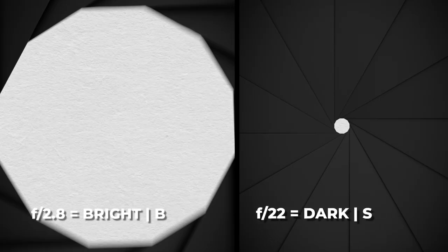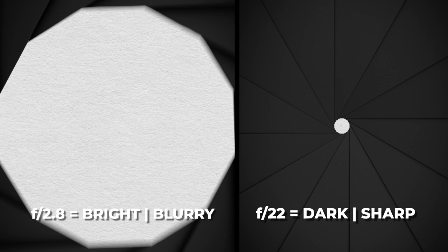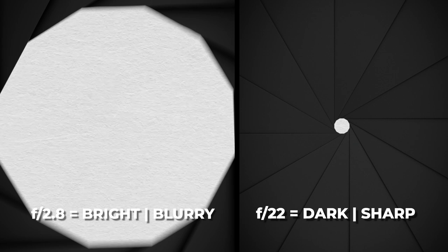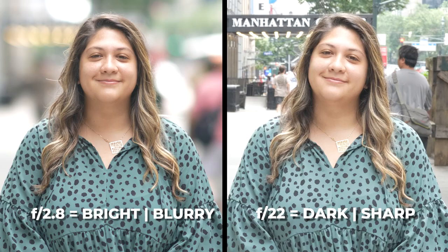The simple formula is: if you want a blurry background, shoot at a low aperture. If you want everything in focus, shoot at a high aperture. Or to put it another way, if you want everything in focus, you need a lot of available light so you can close the aperture as much as possible. And if you want a blurry background, you might need to reduce the amount of available light so that you can fully open up the aperture.